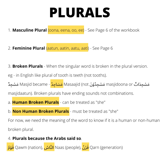Broken plurals could be human broken plurals or non-human broken plurals. We need to know the meaning to know if it is a human or non-human broken plural. Human broken plurals can be treated as a she, and non-human must be treated as a she. There are some plurals because the Arabs said so, like Kaumun, An-Nasu, and Qarnun.